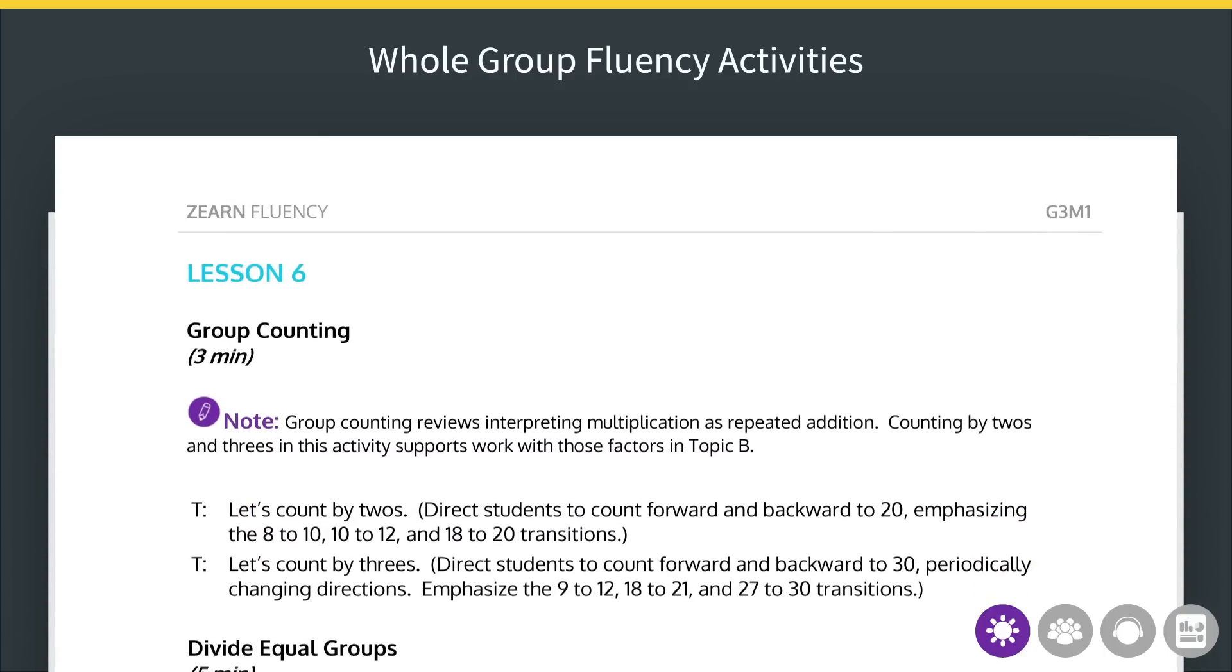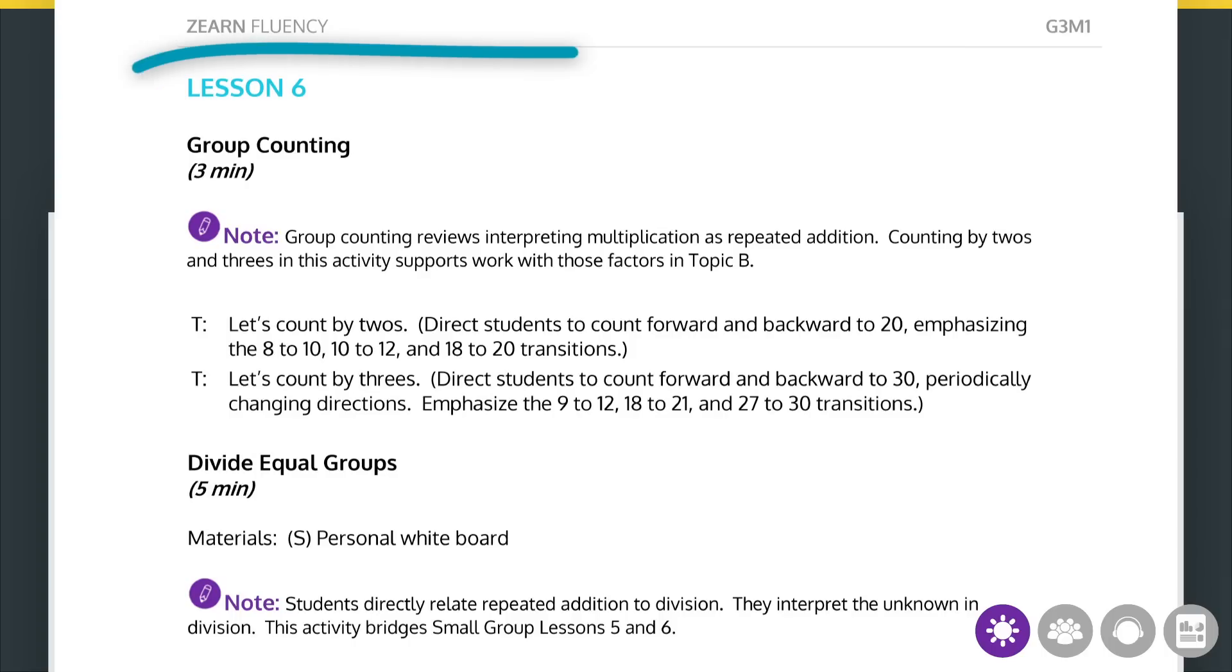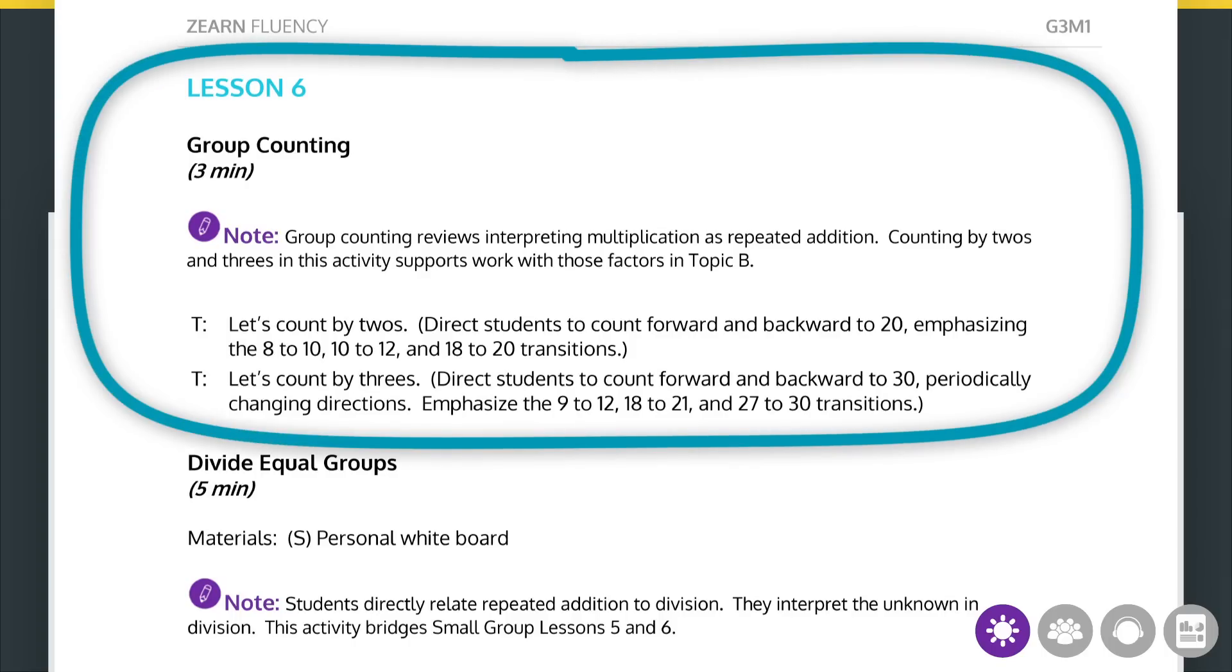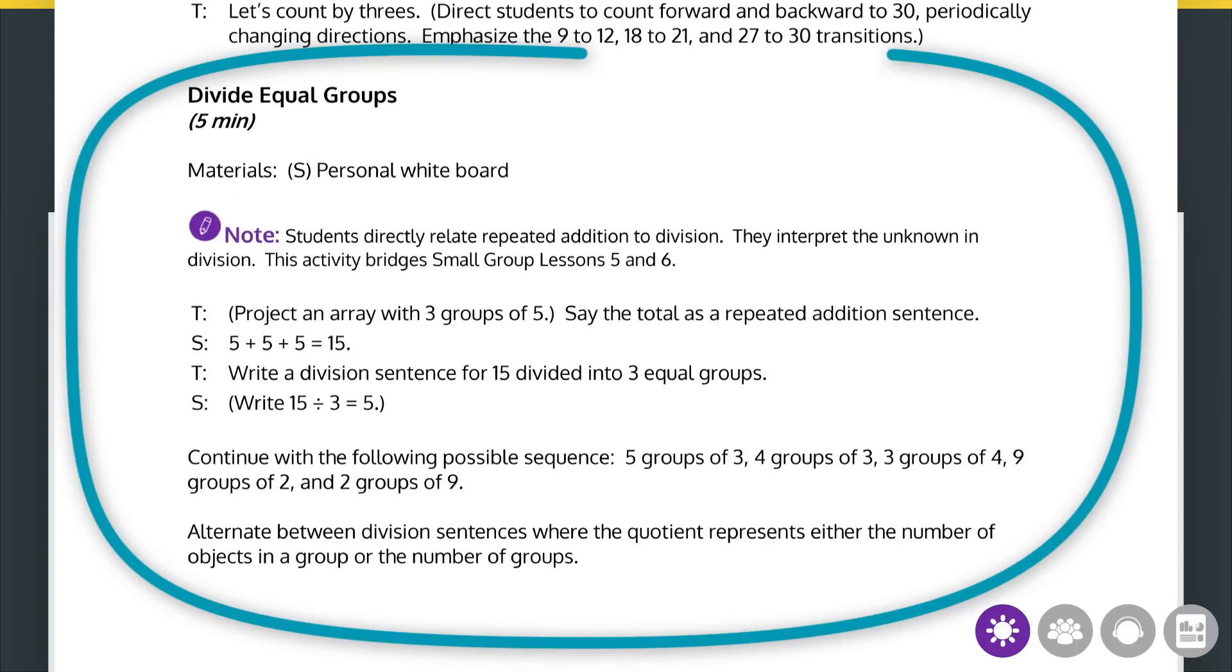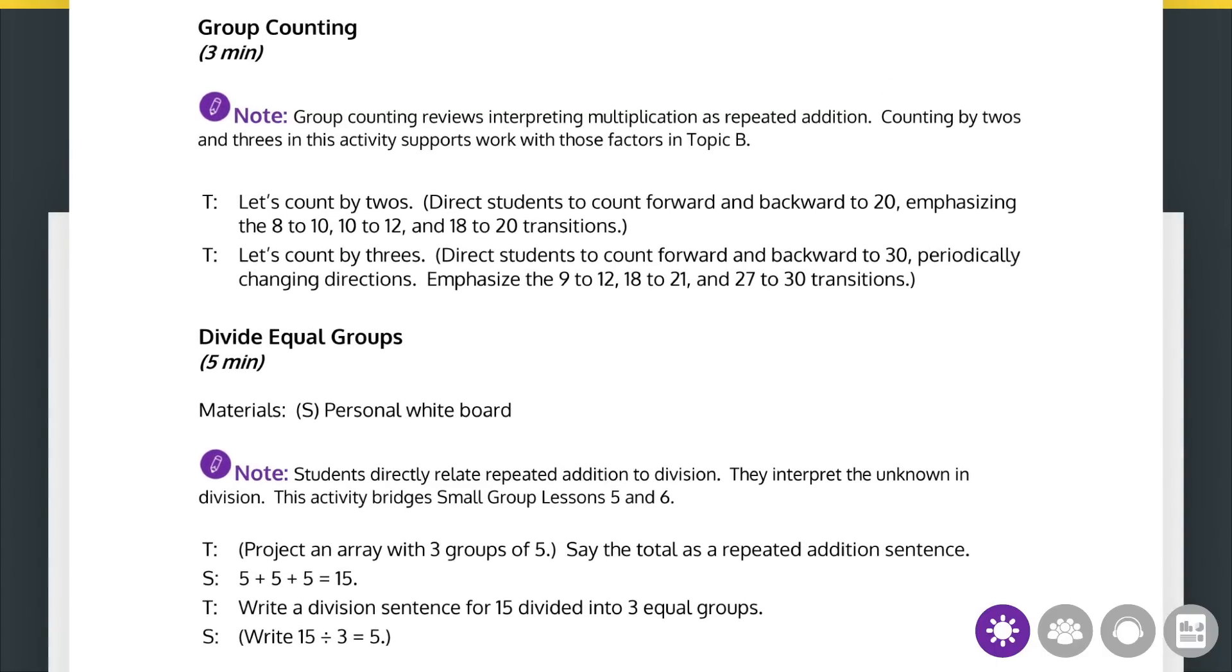Let's take a closer look at some examples from our third grade mission. In this lesson, students group count by twos and threes to build from factors they worked with in a previous lesson. In the second exercise, students continue to work with equal groups as they relate repeated addition to division. These two fluency activities reflect the big idea of the mission, allowing students to move between different representations of equal groups with ease.